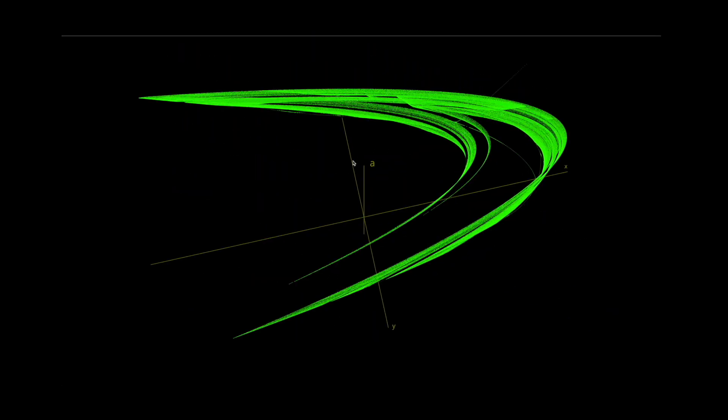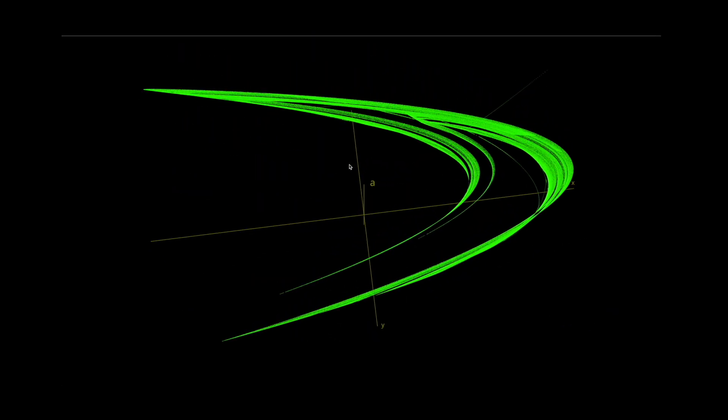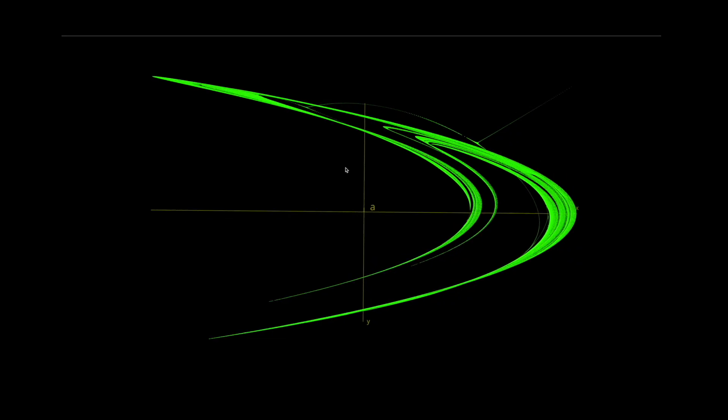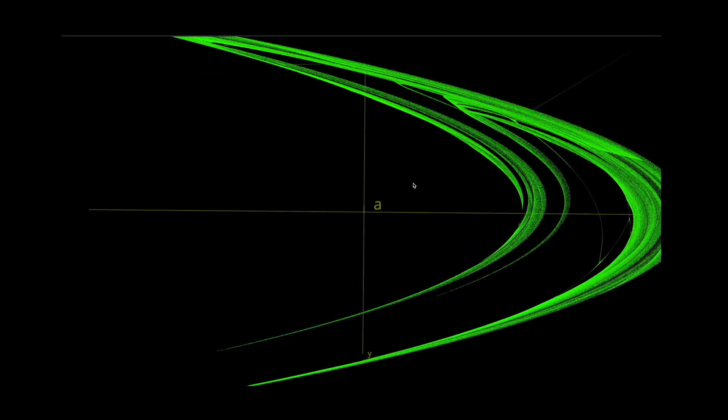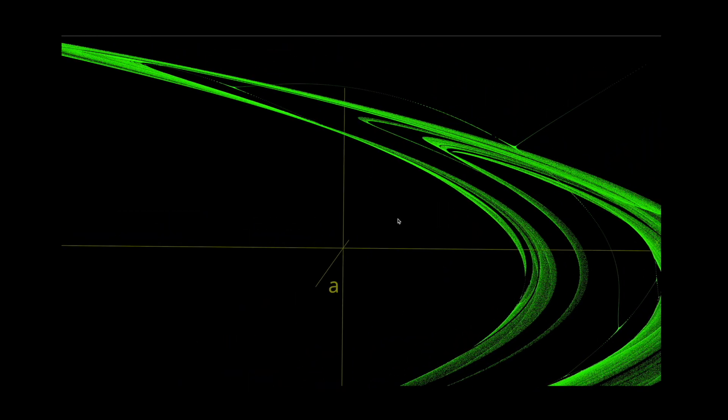If we look at it from above, we can see the Hénon map's strange attractor, with its curved, folded shape. Let's travel into it for a bit and look around.